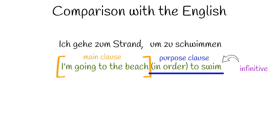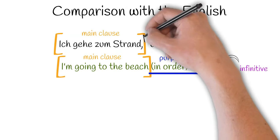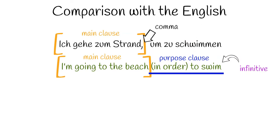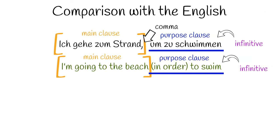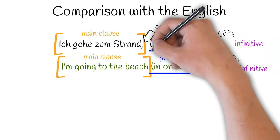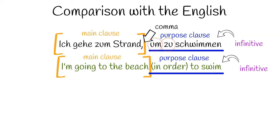If you used a phrase like 'for the purpose of,' you would need the verb in a different form — 'for the purpose of swimming.' But after 'to,' you always have the base form. Now let's look at the German. In German, we have the main clause at the start, and notice that at the end of the main clause there's a comma. Commas in German express the end of a clause, not just a pause for breath. Then we have the purpose clause, 'um zu schwimmen.' The verb schwimmen is in the infinitive. And there are two other words, um and zu — that's as simple as it is. In English you just need 'to,' but in German you need both words, um and zu.